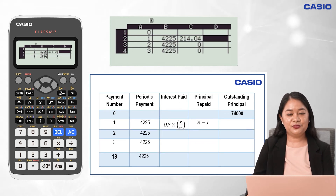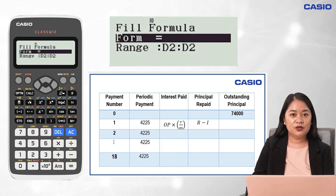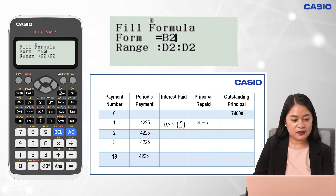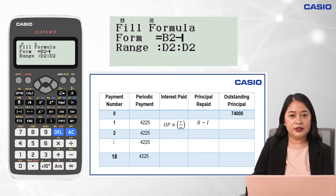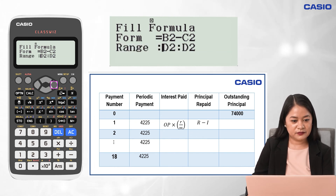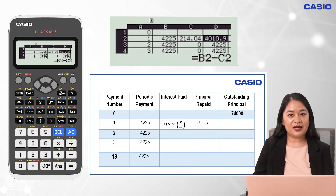For the Principal Repaid, we get the difference of the Periodic Payment and Interest Payment. From cell D2, press Option and 1 to input a formula. For the form, input B2 minus C2 — that is Alpha, DMS, 2, minus Alpha, X raised to negative 1 button, 2 — then press Equal. For the range, that is from D2 to D19. Press the Equal button twice. Note that values after D2 appear the same for now but will change as we complete the table.